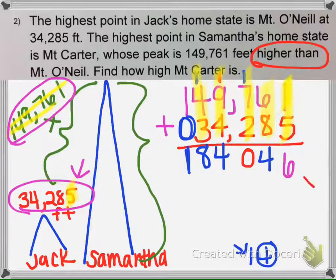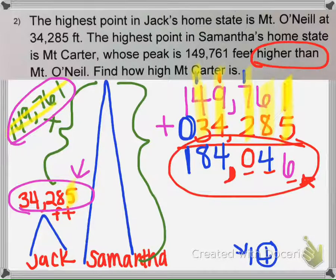And then 4 + 3 is 7, plus 1 is 8. And then we have 1 plus, there's nothing here, so 1 + 0 is 1. Then we start at the far right of the number and count 3: 1, 2, 3. And then we put a comma here. And that is our height in feet of Samantha's home state, Mt. Carter.